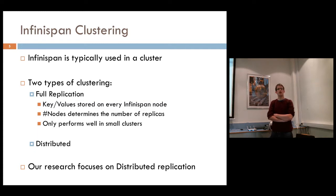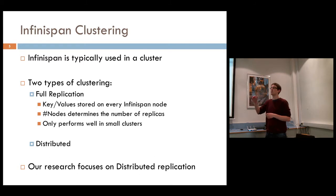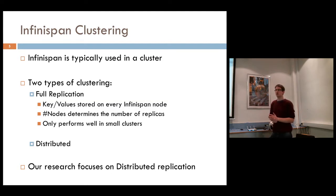Typically, InfiniSpan is utilized in a cluster. If you have an application server, you'll have an application with InfiniSpan underneath it, and you can have a separate application server clustering between those two. Another way InfiniSpan provides is through a REST service in client-server mode — you can have multiple nodes running InfiniSpan, and the application connects to an endpoint and gets to InfiniSpan that way.